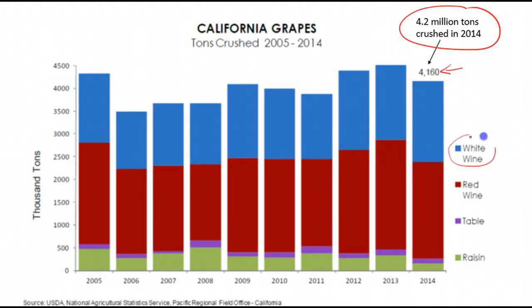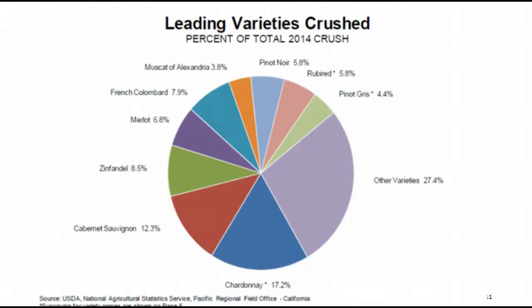That's divided up between white wine, red wine, table grapes, and grapes grown just for raisins. We were down a little bit from the big harvest in 2013, but still over 4 million tons. As a rule of thumb, we're somewhere around 4 million tons typically.